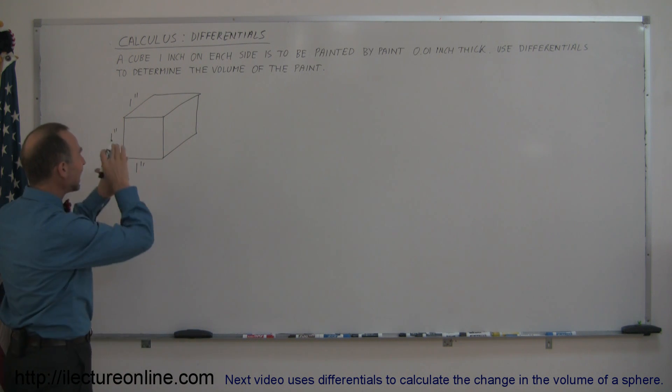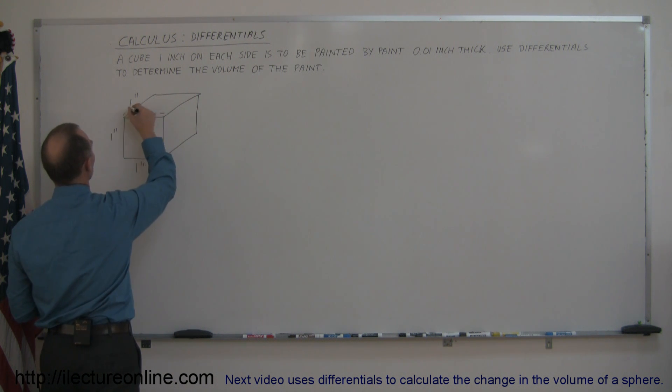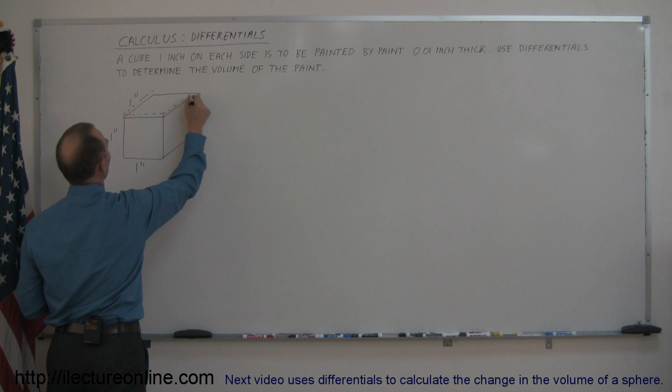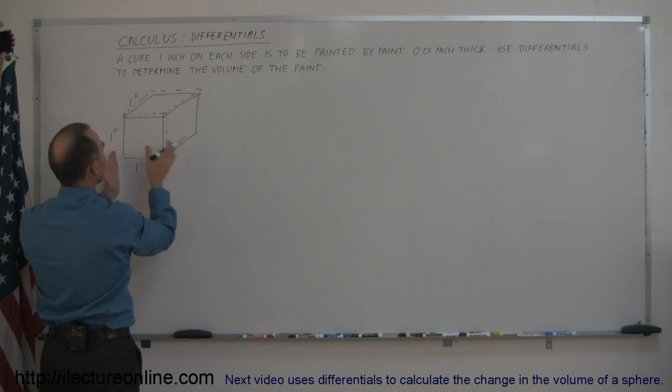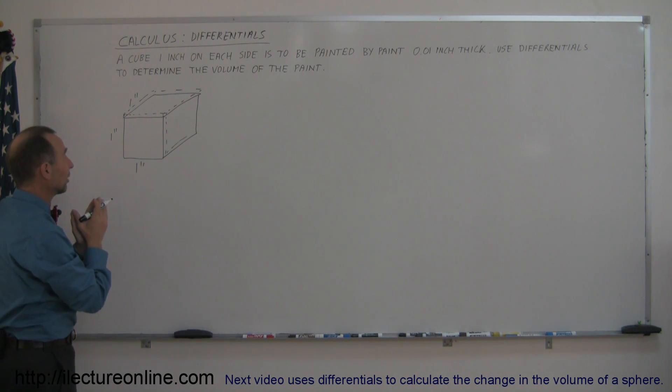Now, imagine we're going to paint this cube. So that would increase the volume of the cube by just a little bit, right? So we're going to put a little layer of paint on top of this cube and on the side of the cube and so forth. So you can imagine that the cube is going to be covered with a little bit more paint, making the total volume just a little bit bigger.